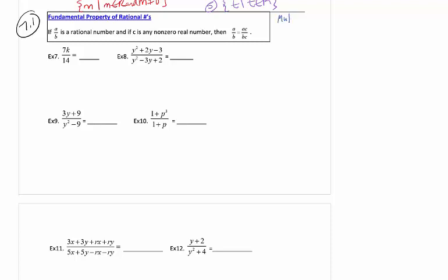Most of this chapter you've seen before when working with fractions, but when variables are introduced, students tend to confuse the different formats. So I want you to put these into different categories. The first category is multiplication problems. For multiplication problems, you can cancel like factors.